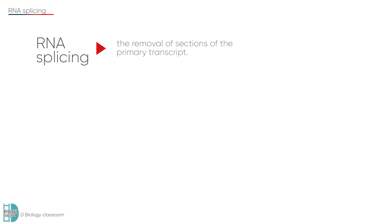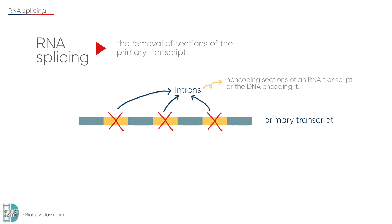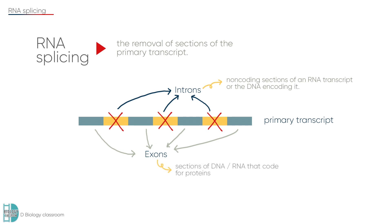RNA splicing is the removal of sections of the primary transcript. The sections removed are called introns — the non-coding sections of an RNA transcript or the DNA encoding it. The nucleotide sequences that remain after the introns are removed are called the exons. These are the sections of DNA or RNA that code for protein.